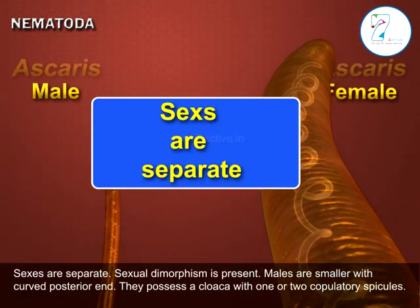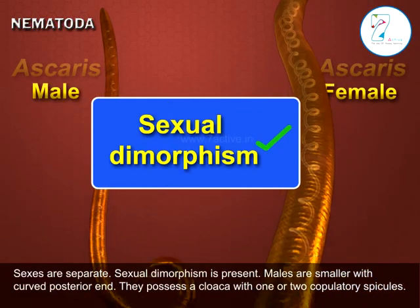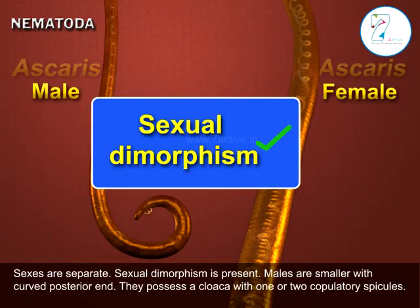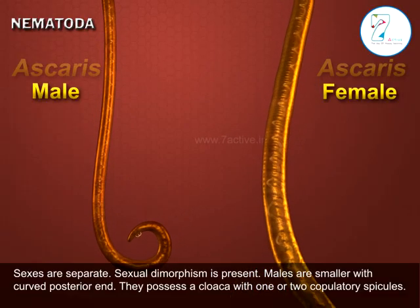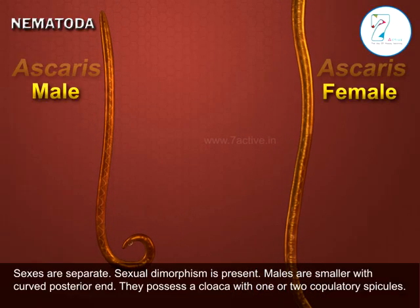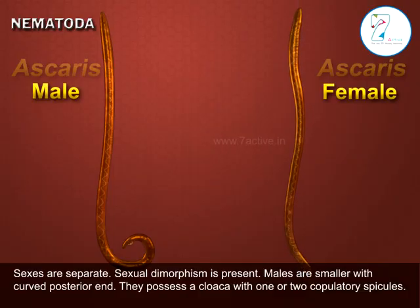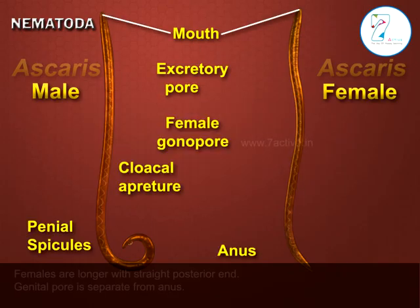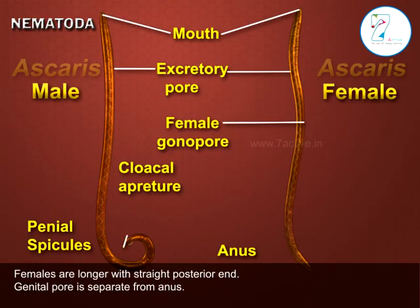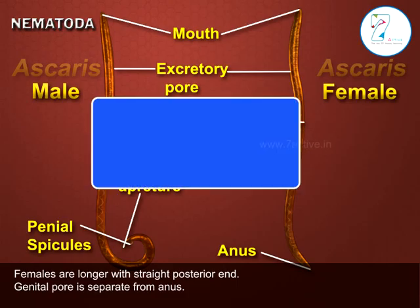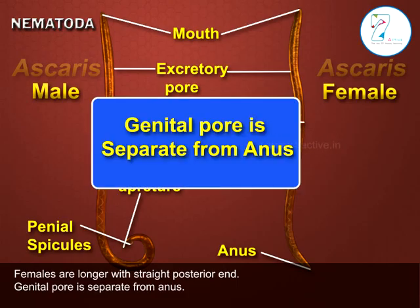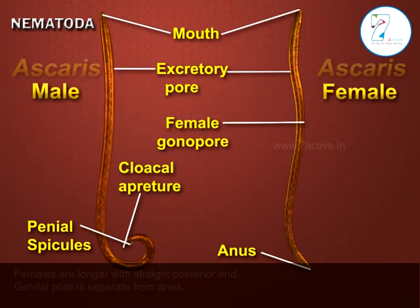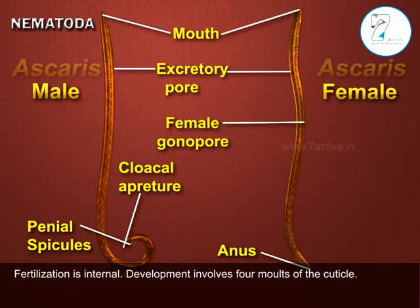Sexes are separate and sexual dimorphism is present. Males are smaller with a curved posterior end and possess a cloaca with one or two copulatory spicules. Females are longer with a straight posterior end, and the genital pore is separate from the anus. Fertilization is internal.